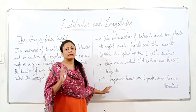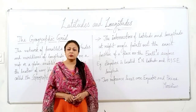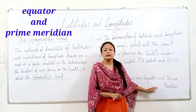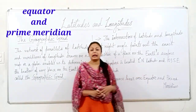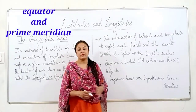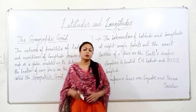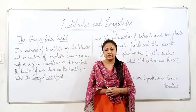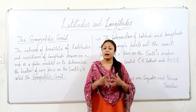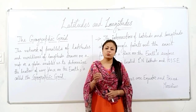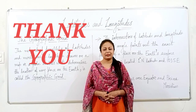There are two reference lines that we follow to draw this network of latitudes and longitudes — the prime meridian and the equator. So students, in this module we have learned about earth's grid and geographic grid, and about latitudes and longitudes and how they intersect to form the earth's grid. That's all in this module. Thank you.